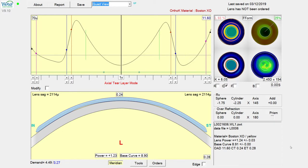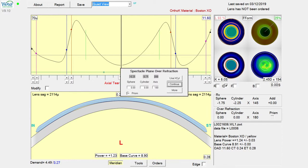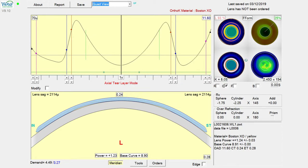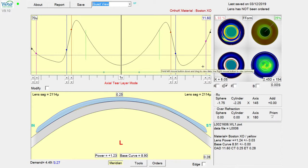With these quadrant-specific changes, I think it's a good idea to prism ballast the lens. It's not a guarantee that the lens is going to sit in a certain way, but I think it does help, and there we have our adjusted lens.